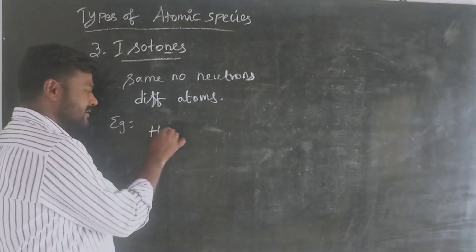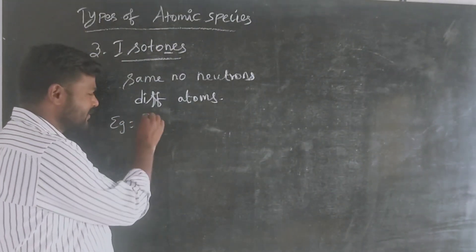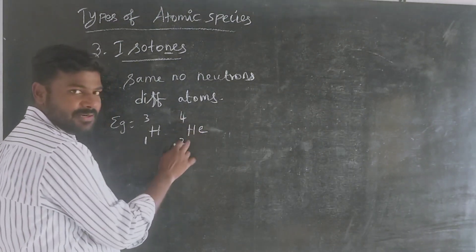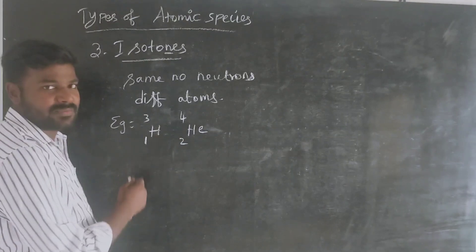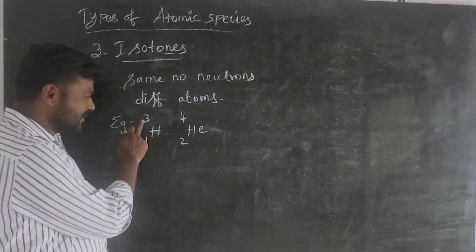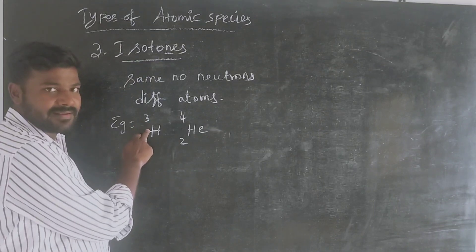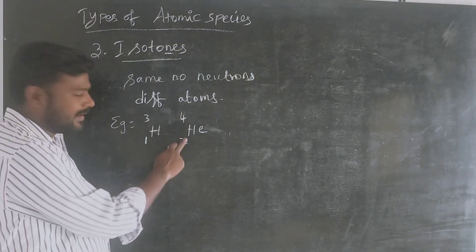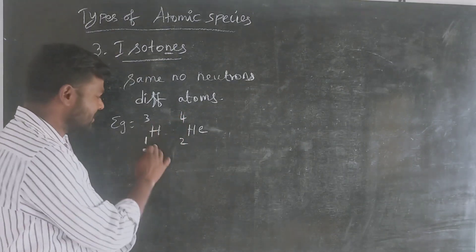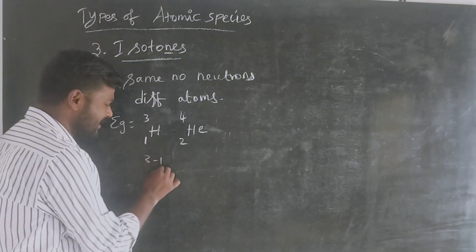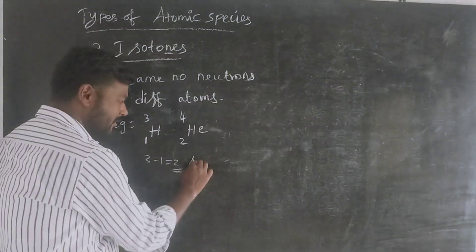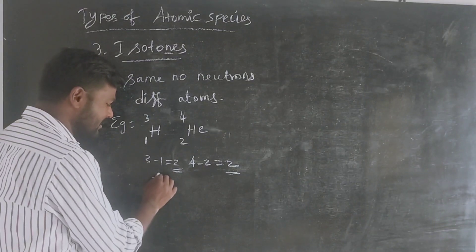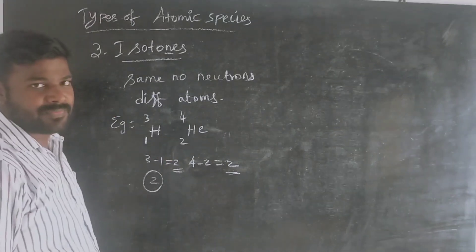For example, hydrogen-3 (tritium) has 3 minus 1 equals 2 neutrons, and helium with mass number 4 minus atomic number 2 equals 2 neutrons. Both have 2 neutrons, so they are isotones. Another example: carbon-13 has 13 minus 6 equals 7 neutrons, and nitrogen-14 has 14 minus 7 equals 7 neutrons. So they are isotones.